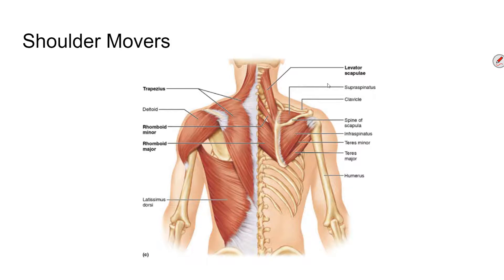The next one is the levator scapulae. You can just look at its name and it tells you what it does — it levitates the scapula, so its job is to pull the scapula up. It also adducts the scapula, pulling it toward the middle of your body, toward the spine.